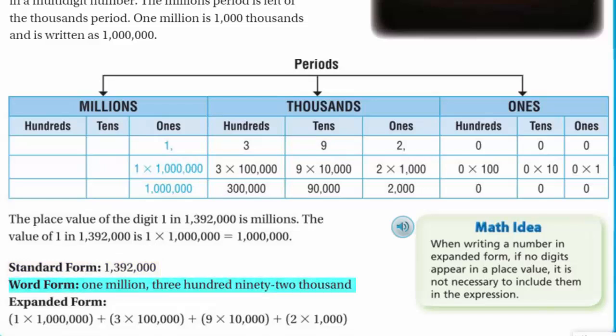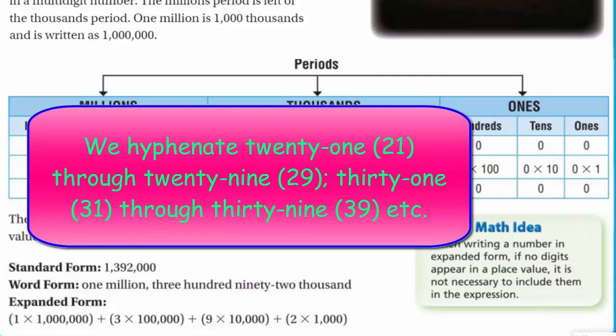But we also have something called the word form. And you can probably guess by just hearing word form that has to do with, that's right, words. Yes. Okay, 1,000,000, and look at, we have that comma, 392,000, and that's how we write it. And keep in mind, we always put a little hyphen. See it there? Yeah. That little hyphen in there lets us know that we're going from a tens to a ones place. So we always hyphenate whenever we say 25, 26, 27, 33, all those that are tens to ones. Okay?